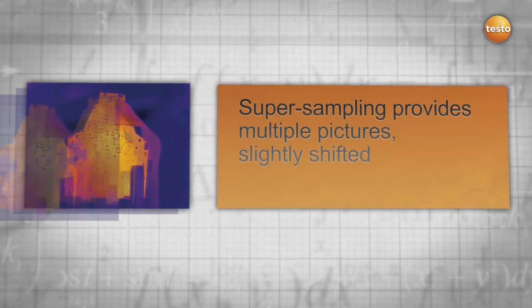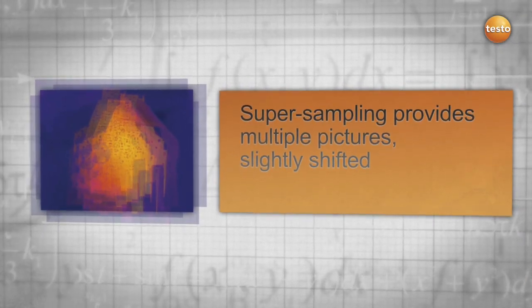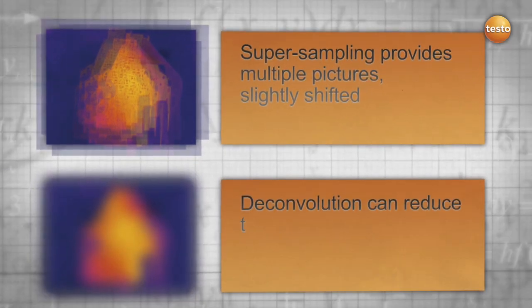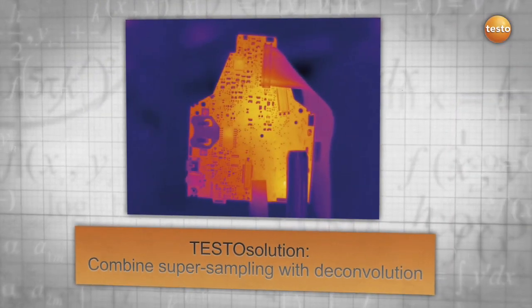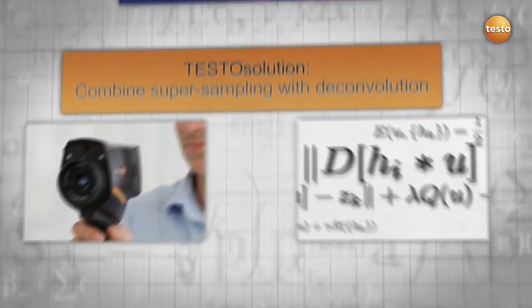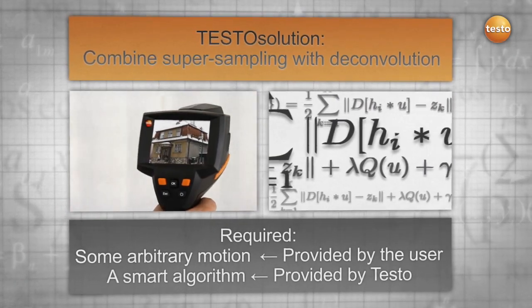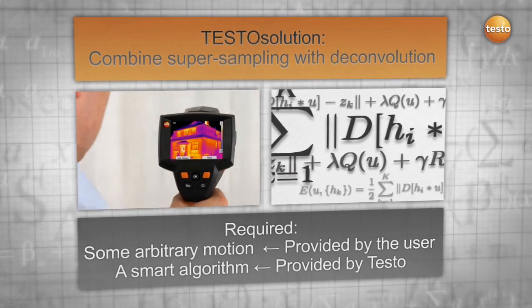The result? Supersampling can take multiple images, slightly shifted, while deconvolution reduces the blurriness. The combination of both is a Testo solution. All we need is the natural movement of your hand and a smart algorithm provided by Testo.